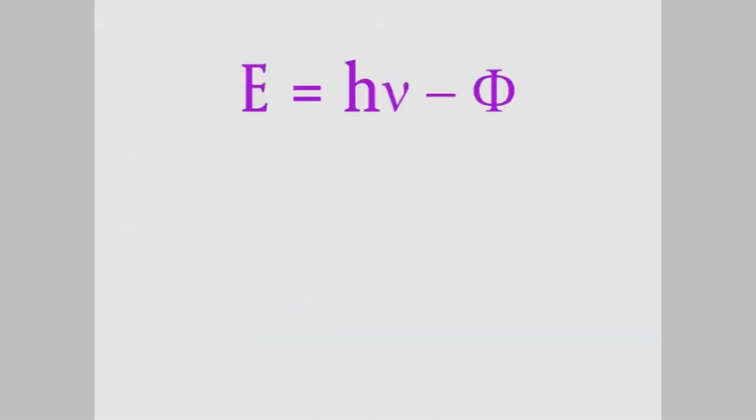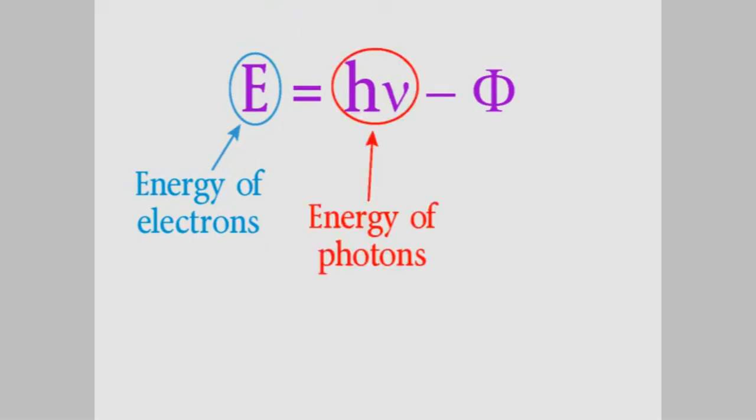Einstein summed all that up in this short equation. E here is the energy of the electrons that come off the metal, and that's equal to this number. H times nu is the energy of the light. The Greek letter nu stands for frequency, so the higher the frequency, the more energy the light has. And H is a number called Planck's constant, which the physicist Max Planck had used earlier to explain black body radiation. I talked about that in an earlier video.